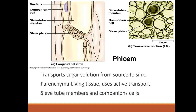Phloem transports sugar solution from the source — the sun — to the sink, which is the plant. It's made up of parenchyma, which is a living tissue and uses active transport. It is made up of sieve tube members and companion cells.